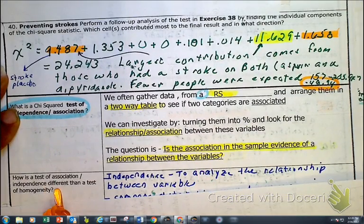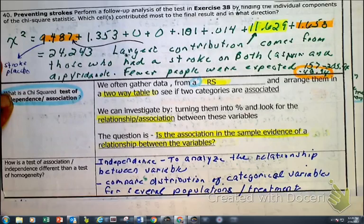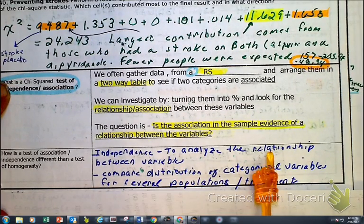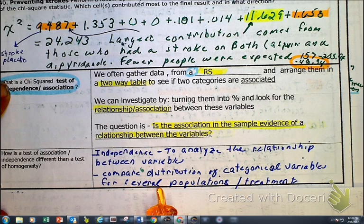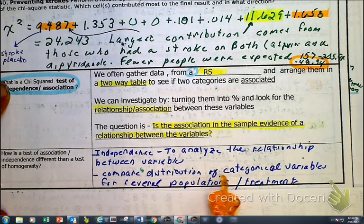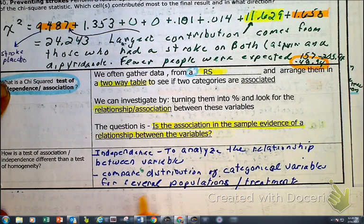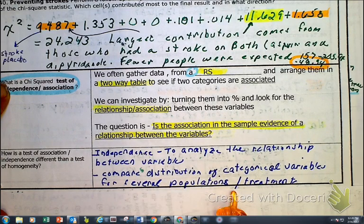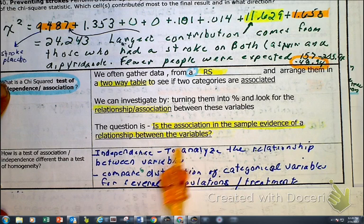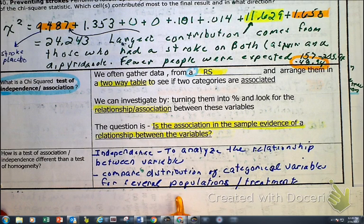So as I'm looking at this idea right here, how is a test of an association different from a test for homogeneity? I'm glad you asked. So first of all, independence has the analysis of a relationship between the two variables. Is one affecting the other? Here we are going to be comparing two categorical data, or comparing categorical data. And remember, chi is always about categories with several populations or treatments. So as we're looking at this idea, we are analyzing a relationship. Are they dependent? Is there an association? Is there a relationship? Again, between several populations.